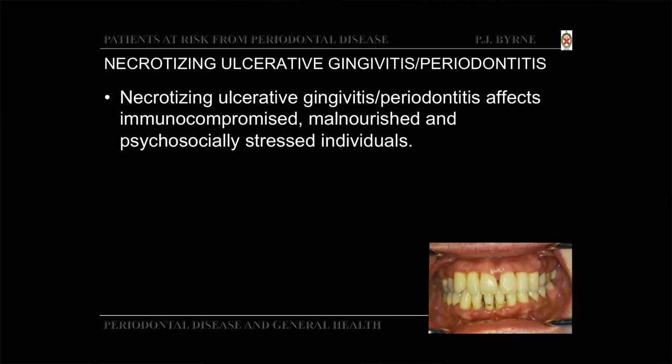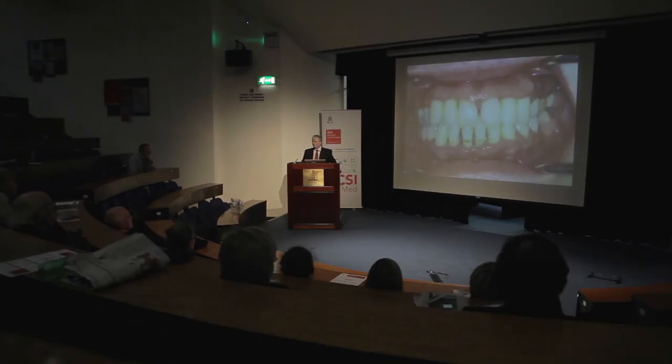Certain types of gingivitis and periodontitis have been shown to be quite destructive, particularly in immunocompromised, malnourished, or stressed individuals. In Europe and the US, necrotizing ulcerative gingivitis or periodontitis develops primarily in adolescents and young adults, and especially in HIV-infected individuals, almost never in young children. This shows the type of destruction that can be seen of the periodontal tissues.